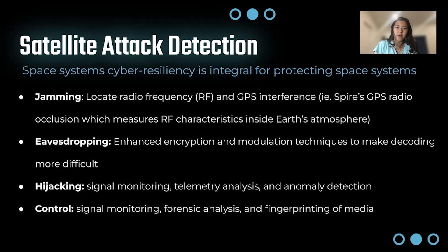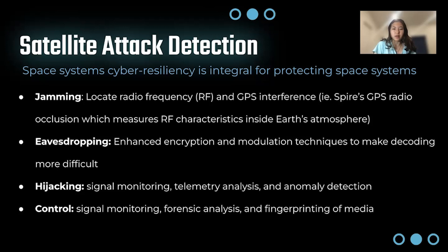For eavesdropping, attack detection involves enhanced encryption and modulation techniques to make decoding more difficult. Since eavesdropping is the ability for a hacker to sneak their way into a communication link and get data, a better way of defending it is just to make it more encrypted, so hackers have a hard time reverse engineering that packet data. Next up, for hijacking signal, you can combine a range of techniques such as signal monitoring, telemetry analysis, and anomaly detection — monitoring for malicious signals, analyzing telemetry packets, looking for commands being sent, monitoring sensor values, monitoring subsystem values, and detecting for any anomalies within that data.